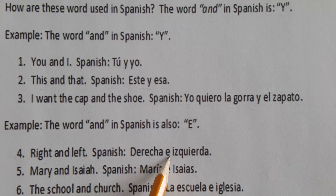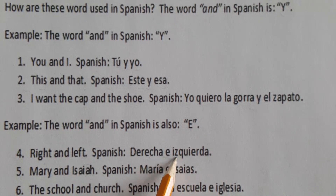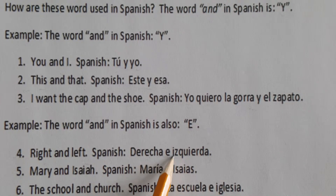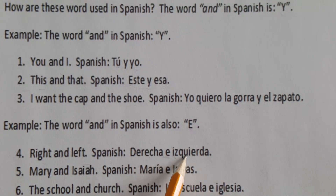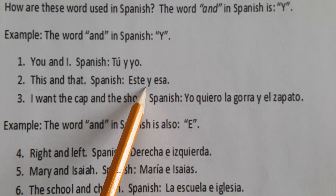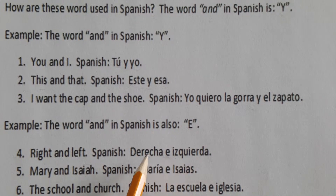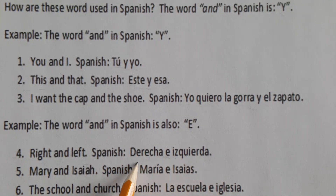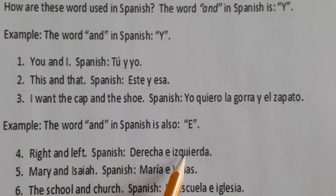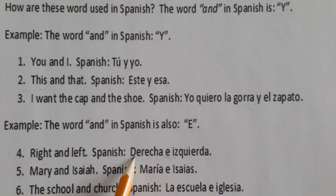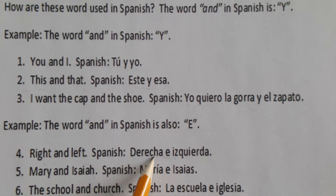When we have two similar sounds right next to each other, we don't want the 'and' to run into 'izquierda.' If I say 'derecha y izquierda,' it runs together. But if I say 'derecha e izquierda,' you can hear the difference. So use 'derecha e izquierda.'